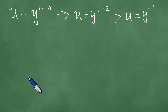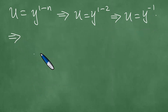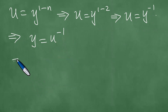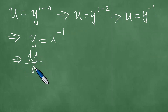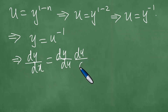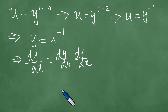We differentiate. Before we differentiate, we make y the subject of the equation, and write y equals u to the power minus 1. Then we can find dy/dx, which equals dy/du times du/dx, by courtesy of the chain rule of differentiation.